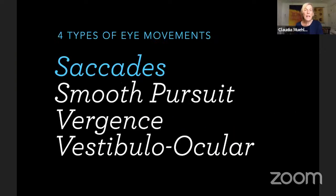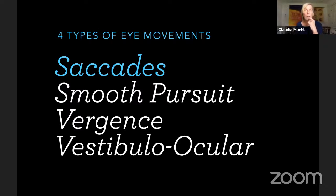There are four types of eye movements, and we're only going to look at saccadic eye movements today. There's also smooth pursuit movements — when you're tracking a flying bird in the sky. Vergence is when you cross your eyes or move them out again — converging, diverging. And vestibular ocular movements are related to balance and feeling grounded. Those are out of order when you have vertigo, for instance.